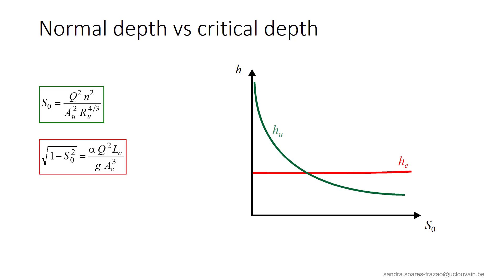The limited influence of S0 on Hc is logical, as the term with the square root represents the cosine of the bed slope angle, and since the bed slope angle is small, this value is always close to 1. One interesting observation is that there is a particular slope for which Hu and Hc are equal. This slope will be referred to as the critical slope, Sc, and it will help us in classifying the flows.